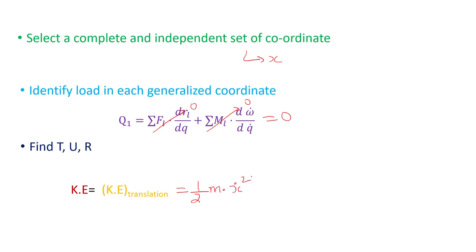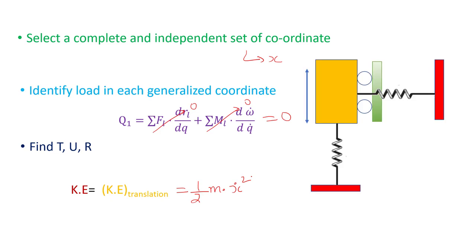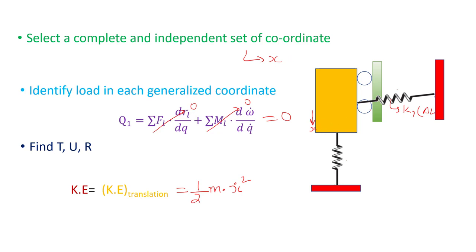Now if the system starts oscillating in the X direction, both springs connected to the block will get stretched and compressed. The spring connected horizontally will no longer remain horizontal — it will be in an inclined direction. This incline causes a change in the length of the spring, which is important when computing potential energy, because depending on the change in length the spring stores potential energy.